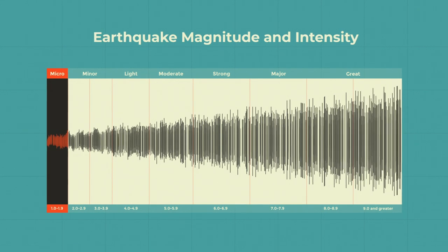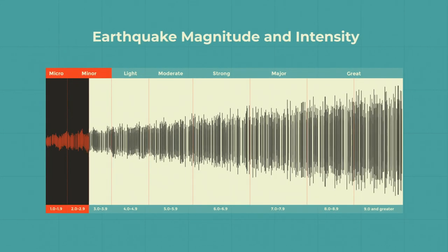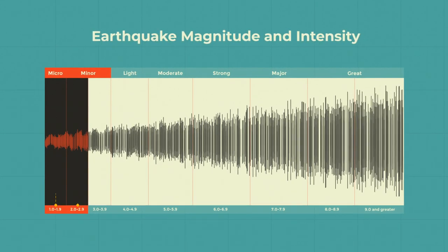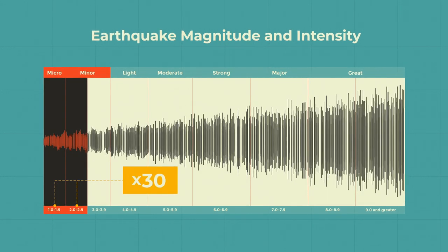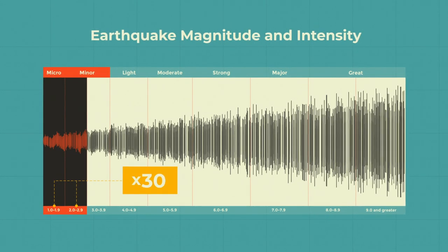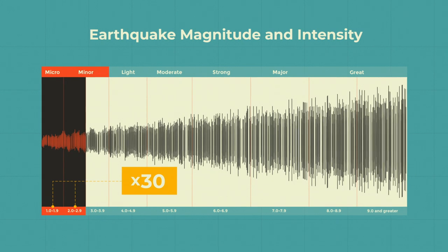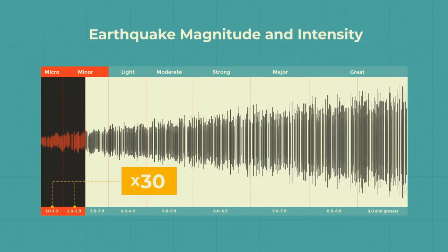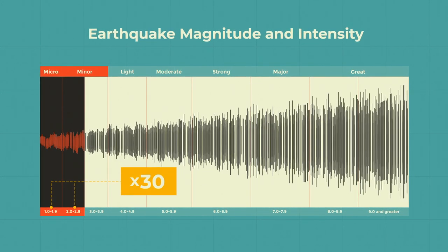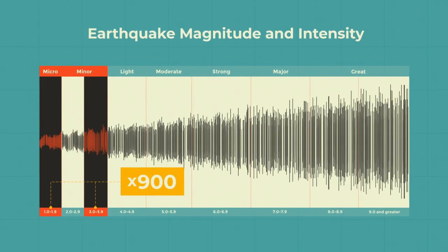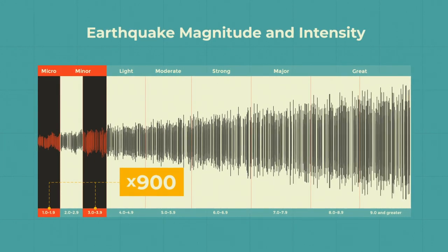An increase of one unit of magnitude is equivalent to 10 times the amplitude and 30 times the energy. This means that a magnitude 2 earthquake will release 30 times the energy of a magnitude 1, and a magnitude 3 earthquake will release 900 times the energy of a magnitude 1.